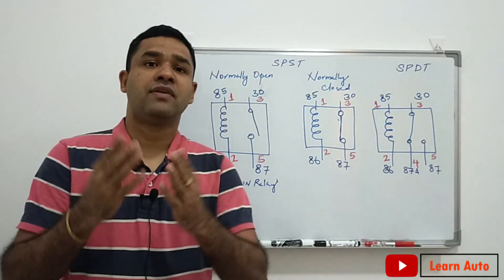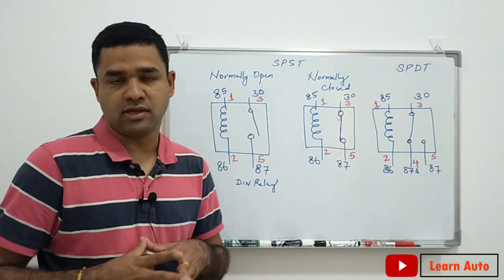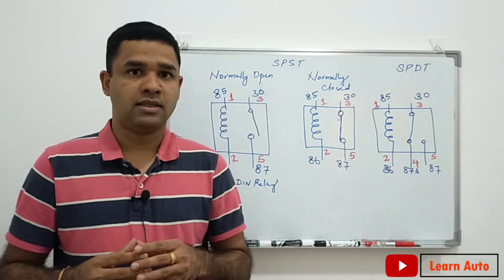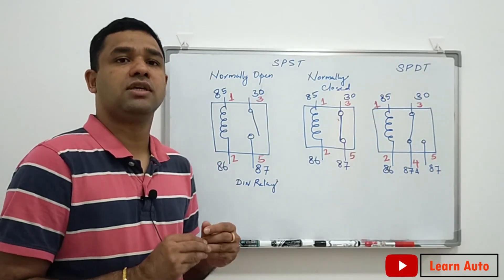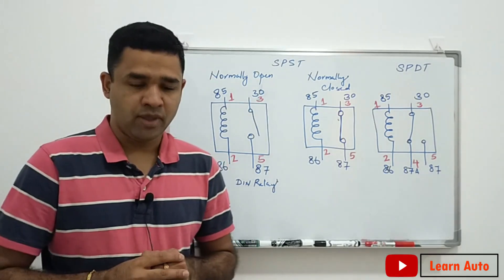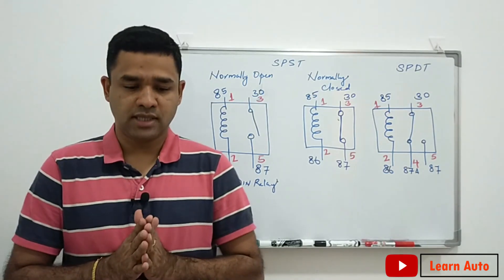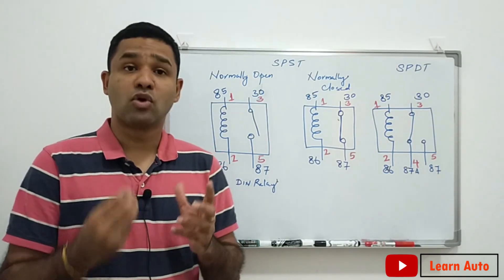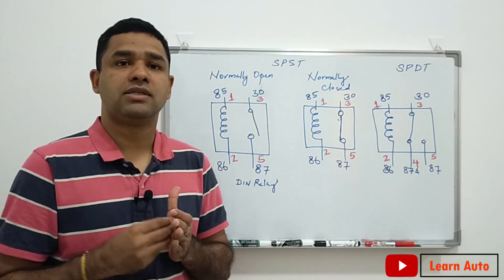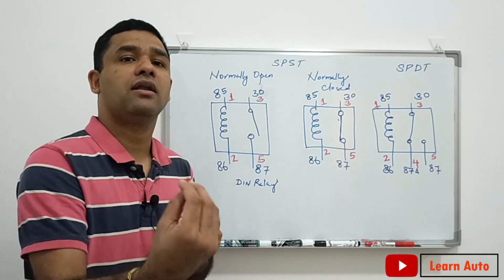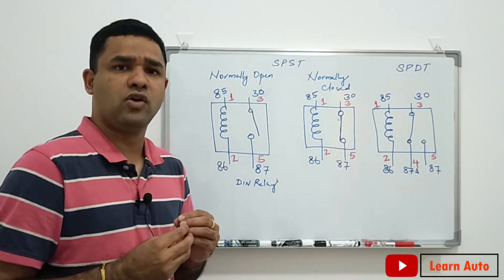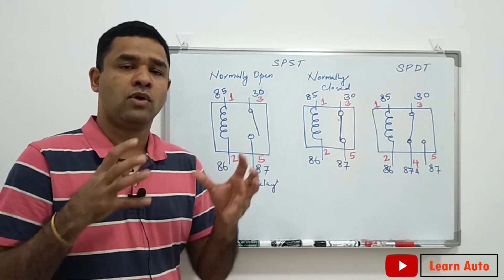What is the relay? It is an electromagnetic device — an electromagnetic switch. Now we are contacting the relay. If a low current is used, it controls a high current.